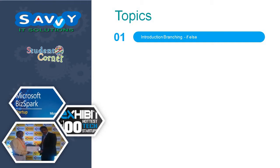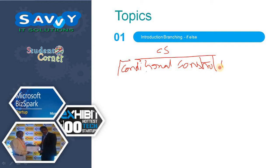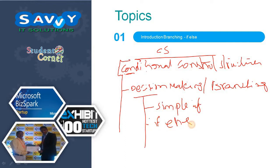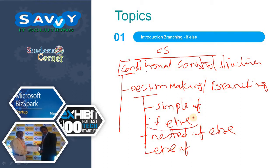In the previous video we also mentioned that control structures are divided into three categories. Under these we have conditional control structures, and under these we are learning about decision making or branching. The subcategories are: simple if, if-else, nested if-else, and else-if ladder. So now we are learning about the if-else statement.